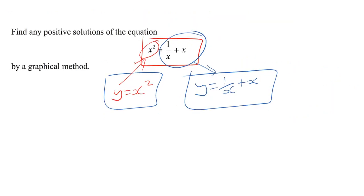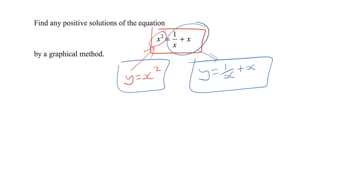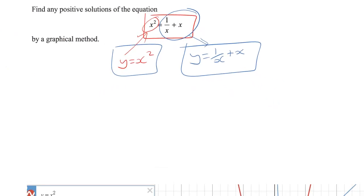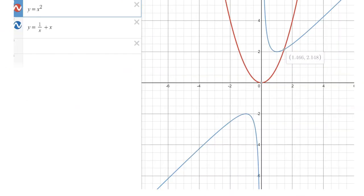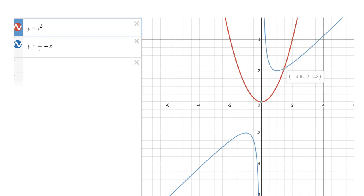Now, this video doesn't cover how to do this on the TI-84 or any other calculator. I'll be using a Desmos application. So here's the graphs plotted on Desmos, but you can do this on your graphical calculator. The red one is x squared. That blue one is y equals one over x plus x.